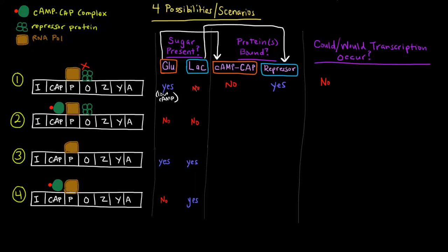Does that make sense? If the prokaryote has glucose available, why would it need to make the enzymes that break down lactose? It wouldn't. On top of that, there's no lactose around anyway. So there's no activator bound, and the repressor is bound — transcription would definitely not occur.